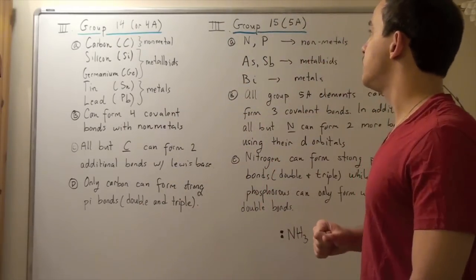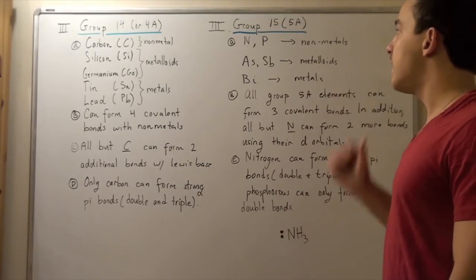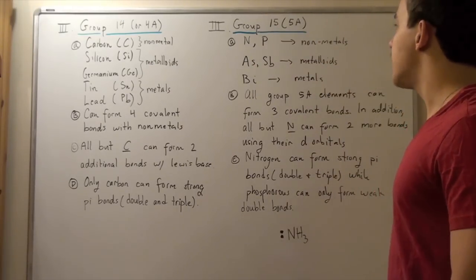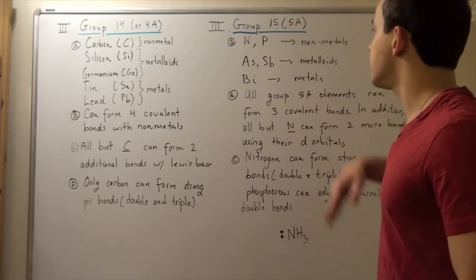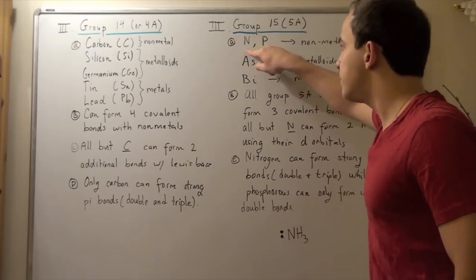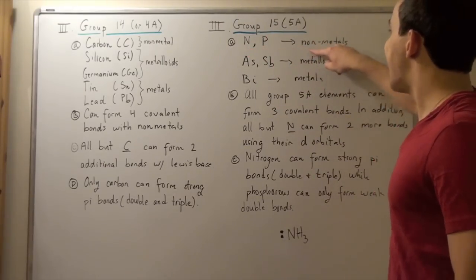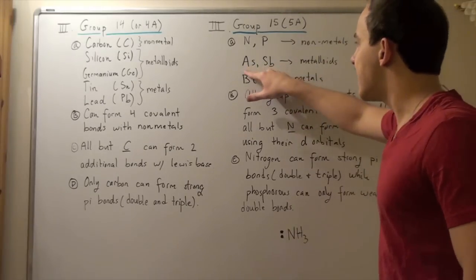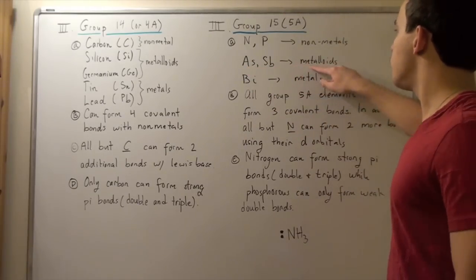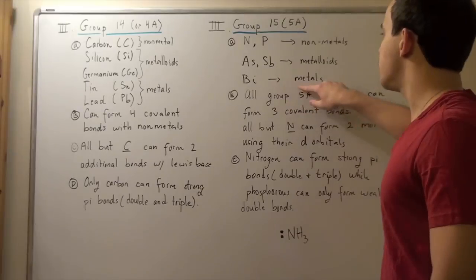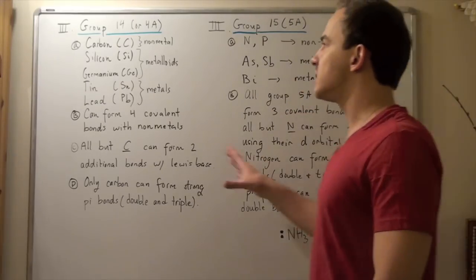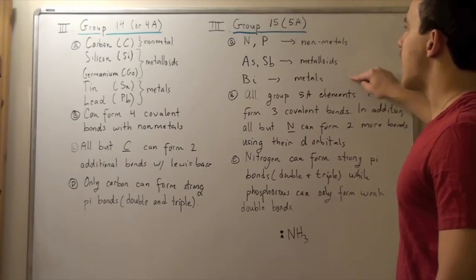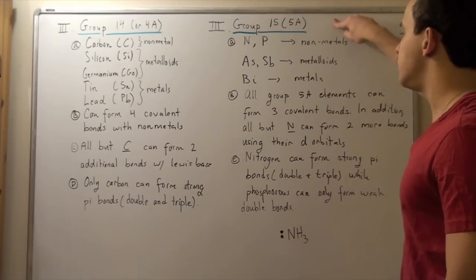Now let's jump to group 15. In group 15 or 5A, we have also at least five atoms. These are the important atoms listed: we have nitrogen and phosphorus, which are both nonmetals. We have arsenic and antimony, which are both metalloids, and bismuth, which is a metal. Just like group 14 or 4A, we have at least one of each in group 15 or 5A.